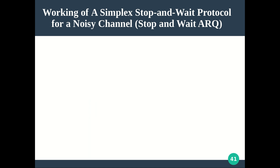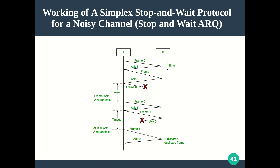Stop-and-wait ARQ performs both error control and flow control. Error control handles lost data, lost acknowledgement, and delayed acknowledgement. The received data itself may be erroneous, which is handled separately by a proper error detection algorithm like CRC. Now, regarding the working of a simplex stop-and-wait ARQ protocol for a noisy channel — we saw the trivial stop-and-wait algorithm for a noiseless channel; this is the noisy channel version.